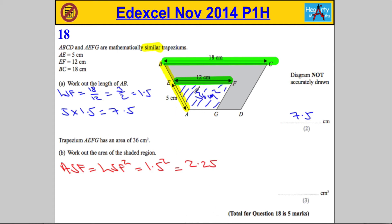So if I know that the area of this is 36, the area of the big trapezium is going to be 36 multiplied by 2.25.